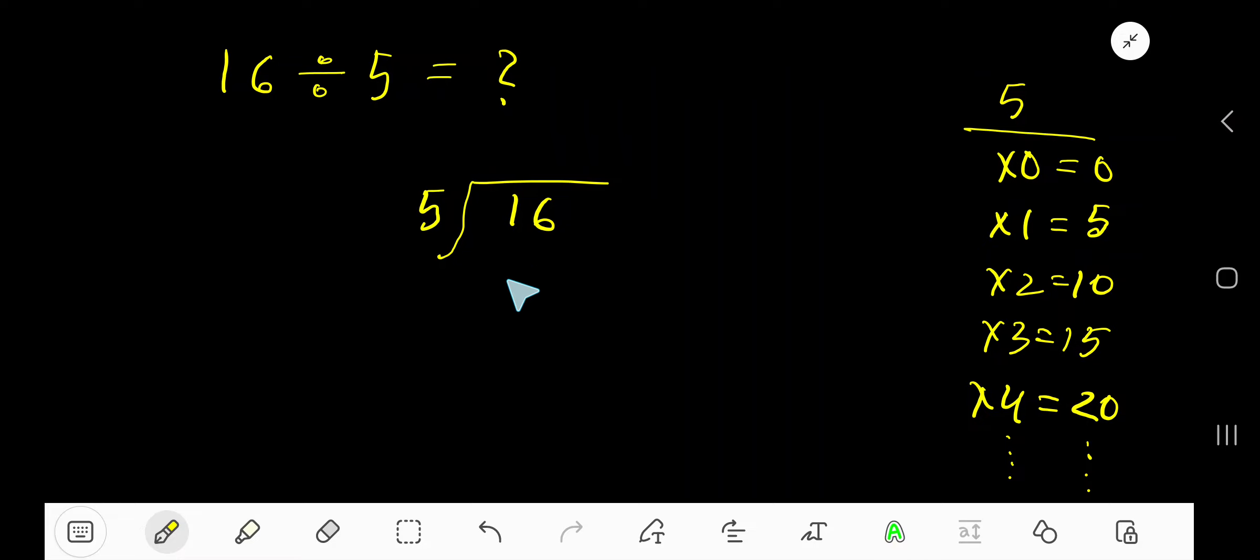16 divided by 5. Here 5 is a divisor, so we need the multiplication table of 5. 5 times 0 is 0, 5 times 1 is 5, 5 times 2 is 10. To find out the multiplication table of 5, just add 5 with the previous step: 0 plus 5 is 5, 5 plus 5 is 10, 10 plus 5 is 15, 15 plus 5 is 20.